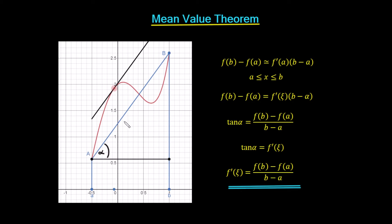Now if we take this blue line and move it up and down, we could move it up until eventually it hits a point at the edge of the function — and that line would be the tangent line at that point. So if we move this blue line up and down but keep the same angle alpha, we could move it all the way up to where the black line is now. At this point — marked as a little circle — this is the very last point at which the line meets the curve, making it a tangent.